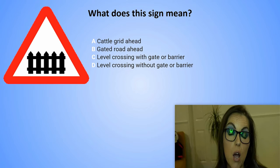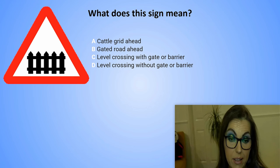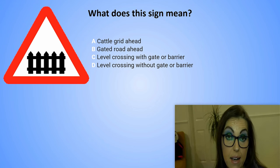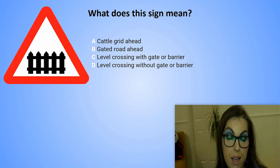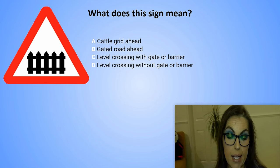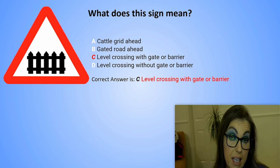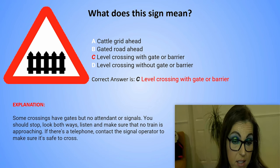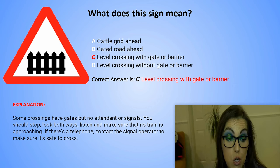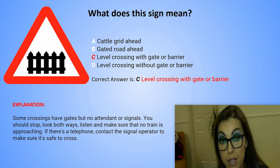What does this sign mean? A. Cattle grid ahead. B. Gated road ahead. C. Level crossing with gate or barrier. D. Level crossing without gate or barrier. The correct answer is C. Level crossing with gate or barrier. Explanation: Some crossings have gates but no attendants or signals. You should stop, look both ways, listen and make sure that no train is approaching. If there is a telephone, contact the signal operator to make sure it's safe to cross.